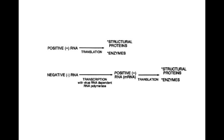For negative RNA, first it needs to be converted to positive RNA — which is our equivalent to mRNA — and then it can be easily translated into structural proteins and enzymes. Negative RNA needs something called RNA-dependent RNA polymerase, and I promise this will become very simple in the following story.